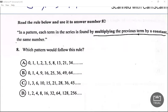Which pattern would follow this rule? We can eliminate this because there's no number times zero that can give you a one. Anything times zero works out to zero, so there's no number. We can eliminate these two.